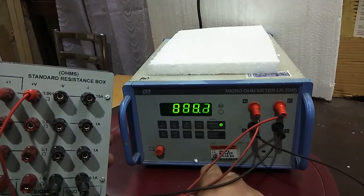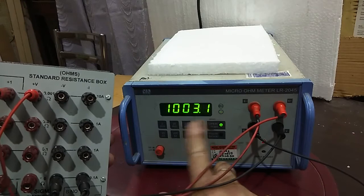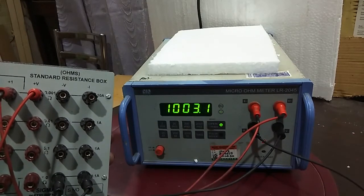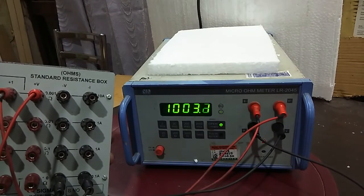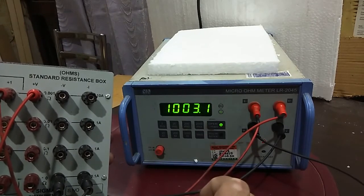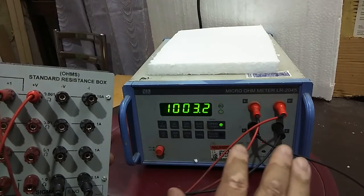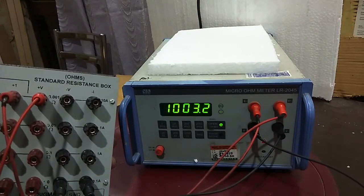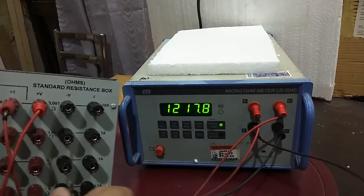So I have put a thousand ohm result and it is showing one double zero three point one. Four and a half digit results are good. The accuracy is point zero five percent in this model.